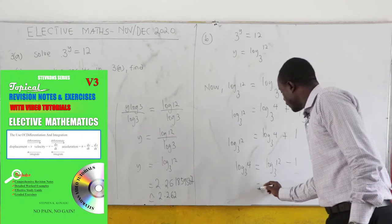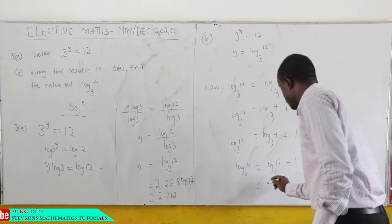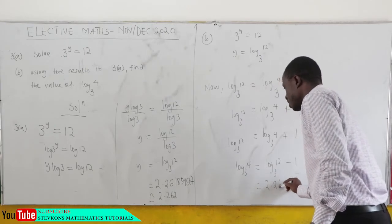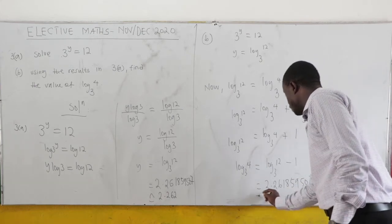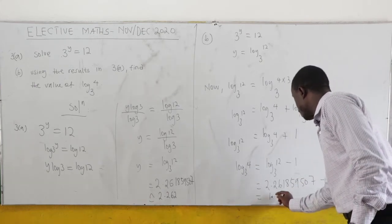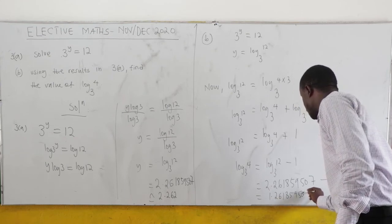Now, what is log₃12? Log₃12, we had it to be this. So that is 2.261859507 minus 1. And this is just 1.261859507.